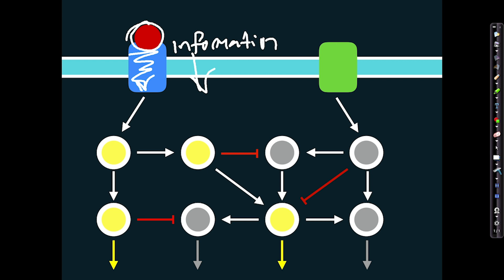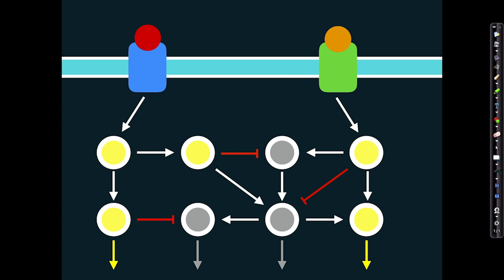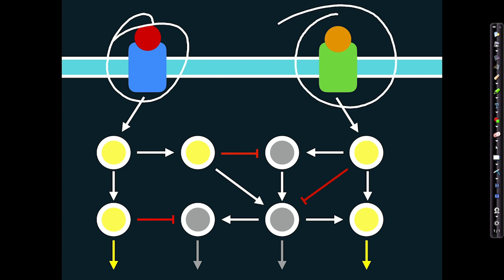When the second receptor is occupied — it's a different receptor, interacts with a different ligand, and interacts with a different set of proteins inside the cell — it elicits a different pattern of activity inside the cell, distinct from the pattern elicited by the first receptor. And when both receptors are active together, we get an entirely new pattern of subcellular network activity, where the signaling pathways activated by receptor one interact with those activated by receptor two, producing a brand new overall pattern.